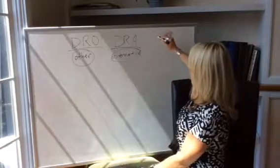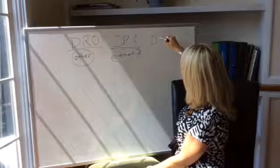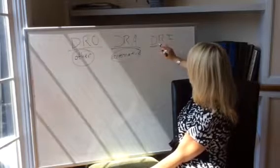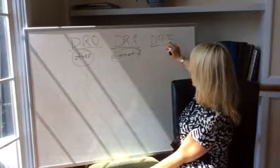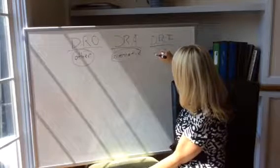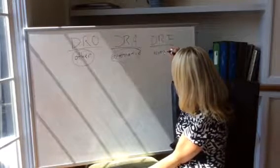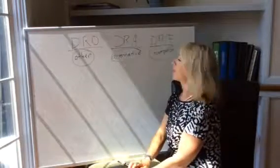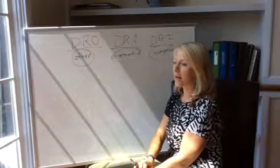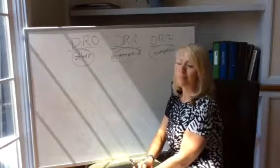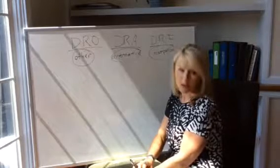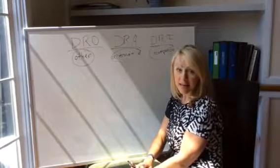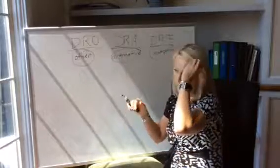And then over here, I'm going to do DRI, which is sometimes confused with DRA, because Differential Reinforcement for Incompatible Behavior is technically an alternative as well, but incompatible is more specific in that it competes with the target behavior for decrease. It makes it really hard for that individual to engage in whatever the behavior is that we want to decrease.